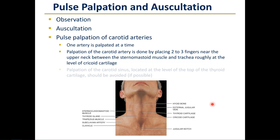Palpation of the carotid artery is done by placing two to three fingers near the upper neck between the sternocleidomastoid muscle and trachea, roughly at the level of the cricoid cartilage. Palpation of the carotid sinus, located at the level of the top of the thyroid cartilage, should be avoided if possible, as stimulation of the carotid sinus will activate the parasympathetic system, which might result in AV nodal blockade and a substantive decrease in heart rate.